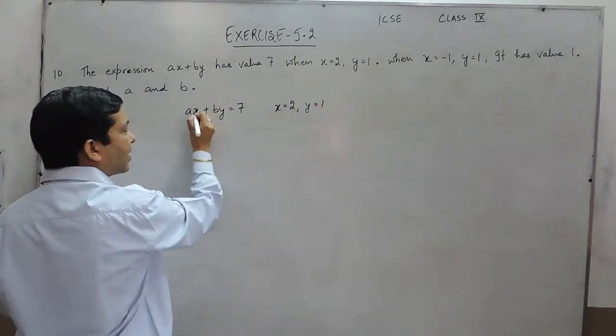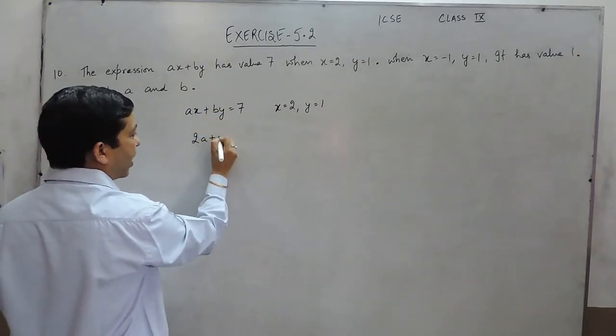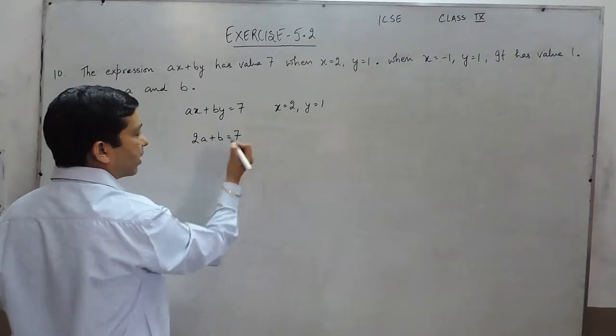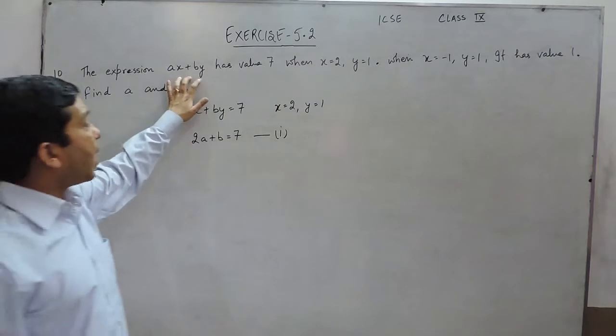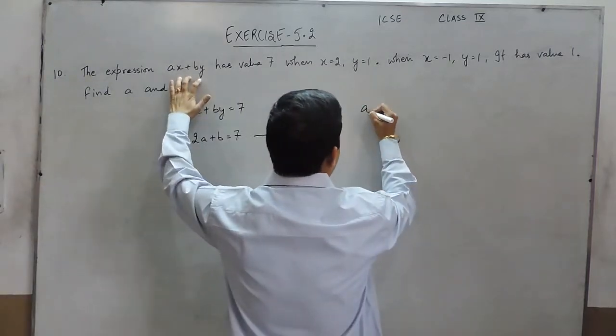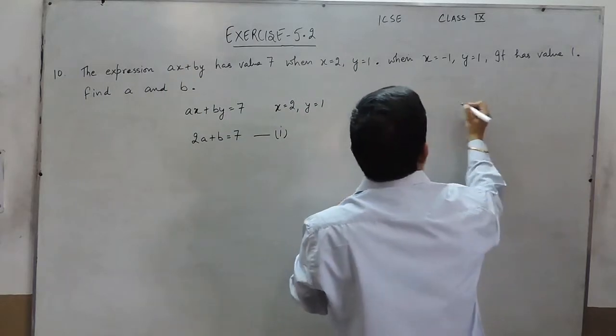So when we put the value of x as 2 and y as 1, it comes out to be 2a plus b is equal to 7. So this is the first equation we have.